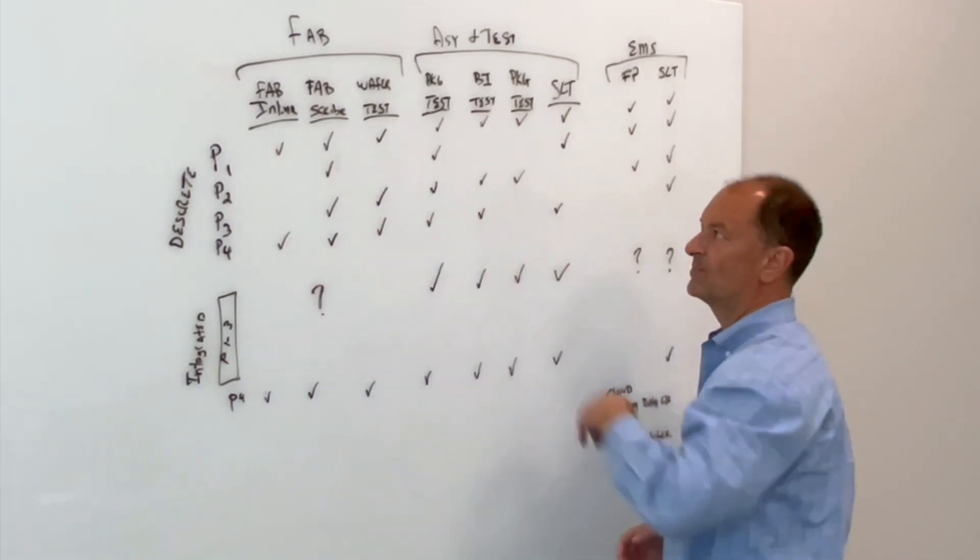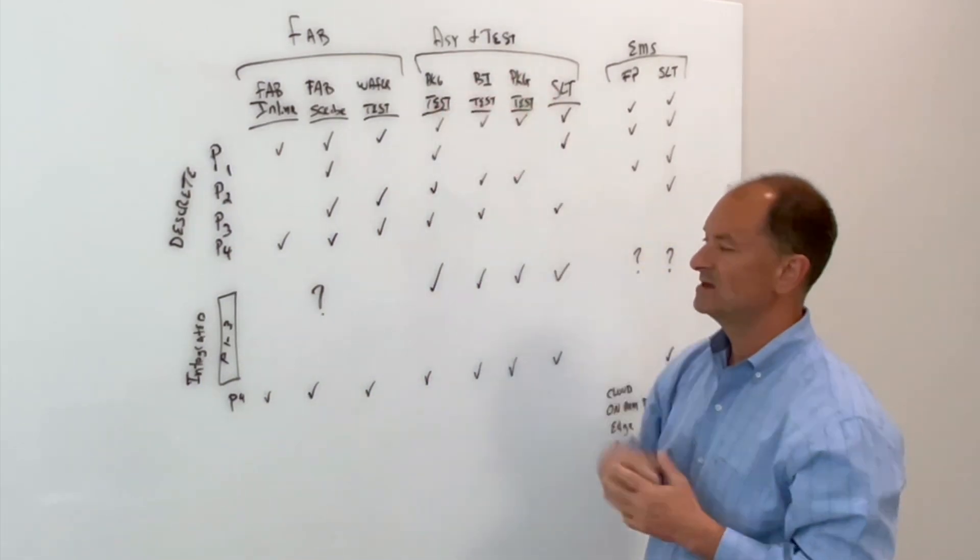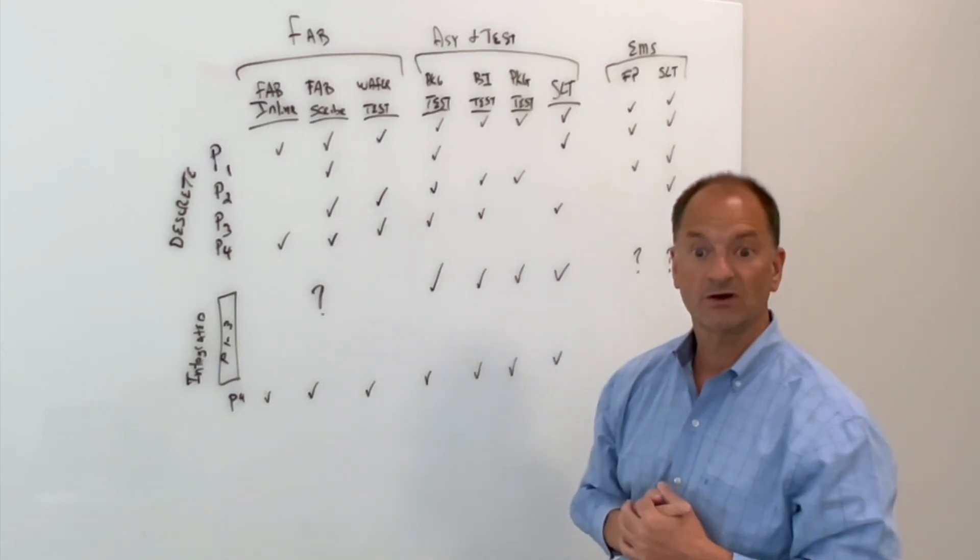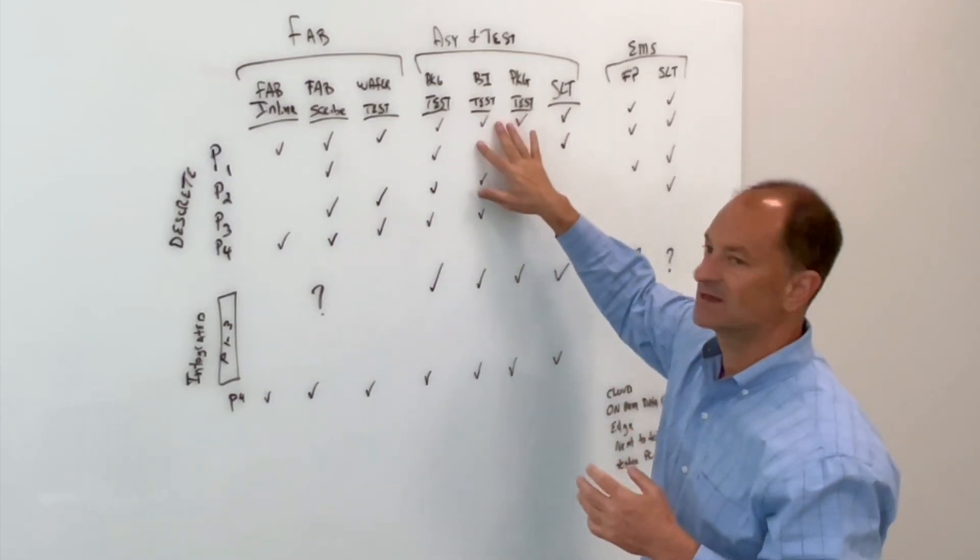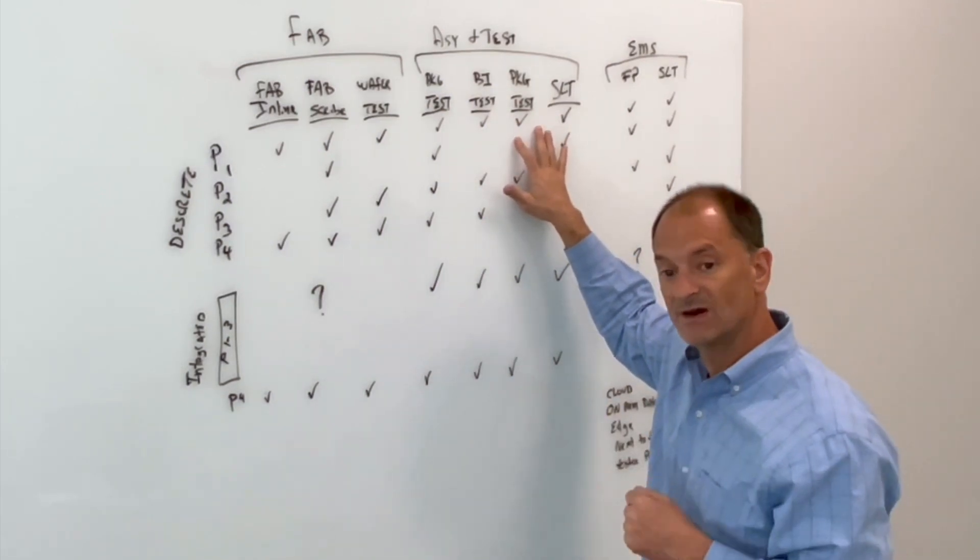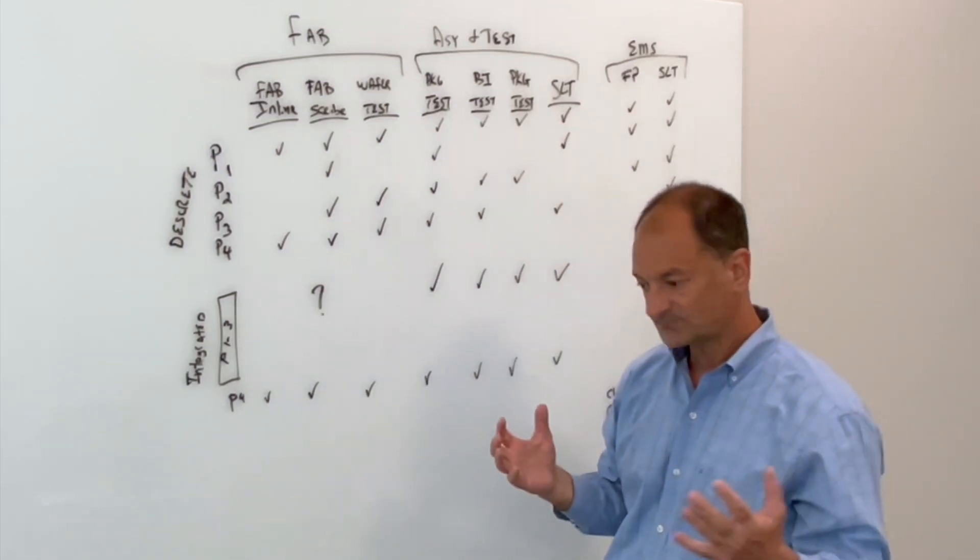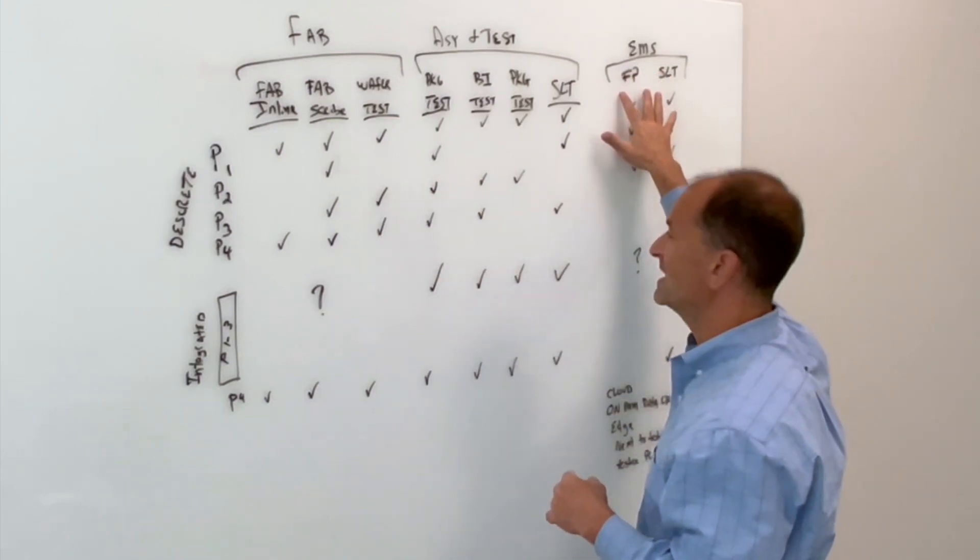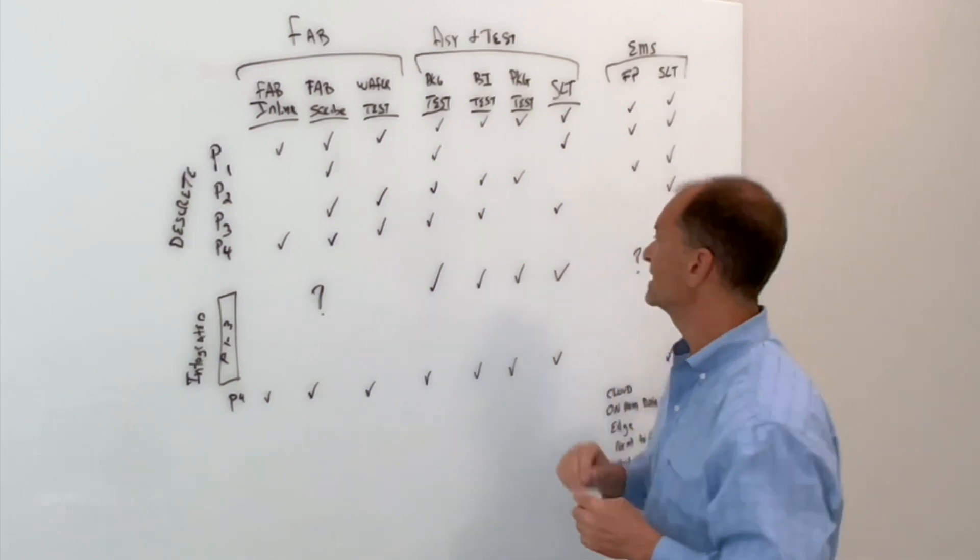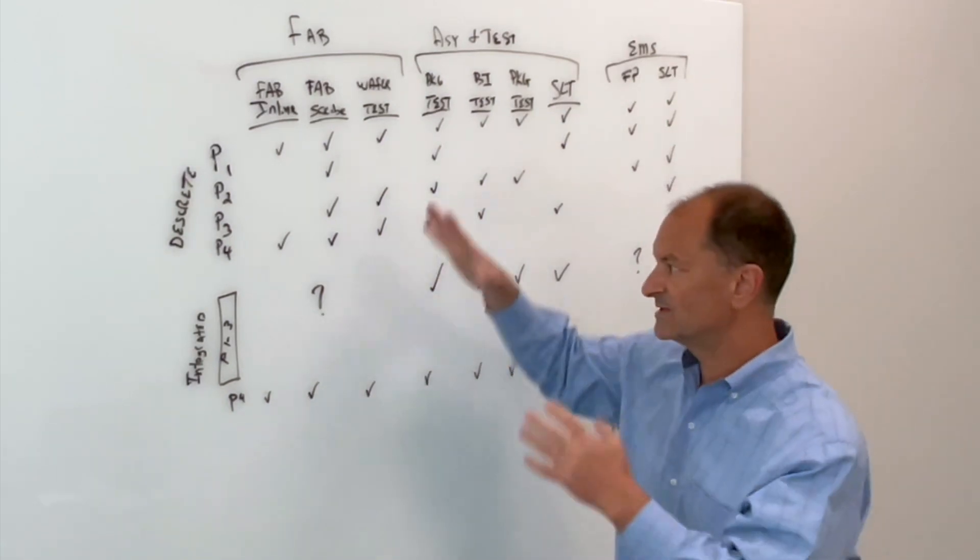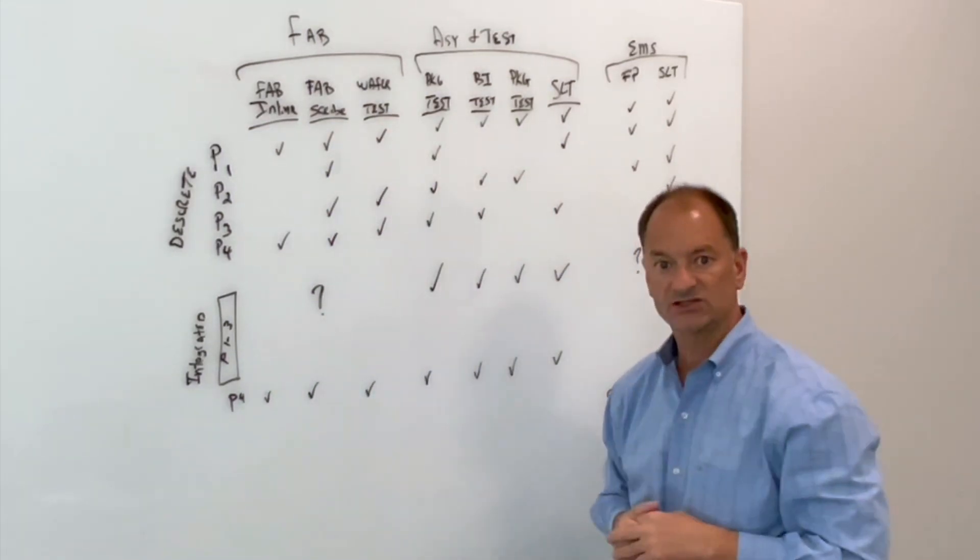So then those discrete parts will go into an assembly and test factory, and they'll get packaging and then start their test journey at that point. You might get a package test. They might get a burn in test. They get a post burn in test to see if anything fails during burn in. And they might have a system level test on them. And then they go off to the EMS. They might have some flying probe that comes in and checks to make sure that they've been placed and soldered correctly. And then maybe some more system level tests. These are when they're discrete products. So you can see any kind of variation might actually occur.